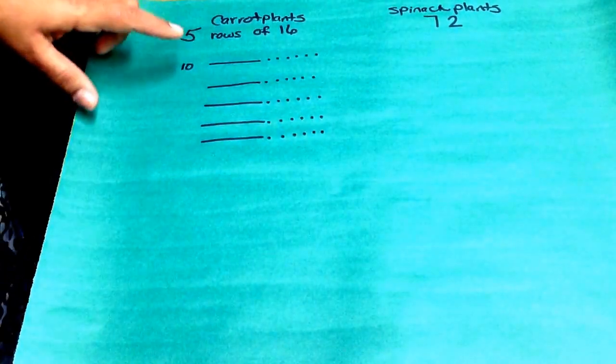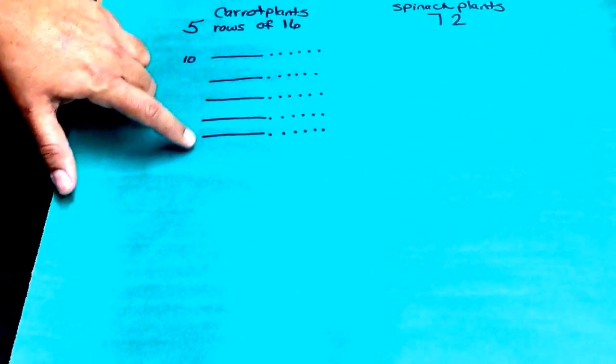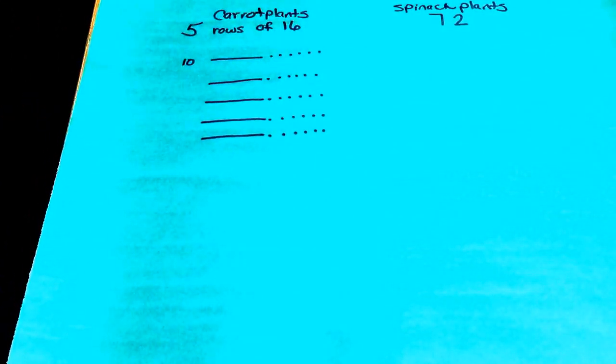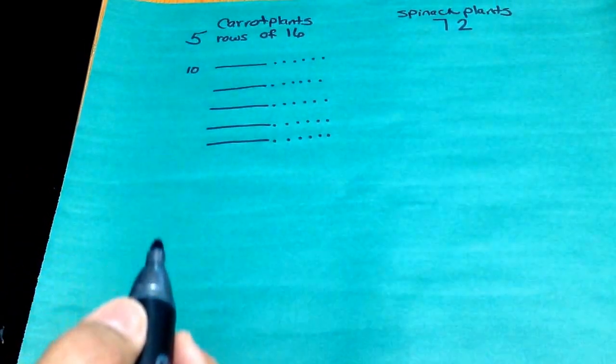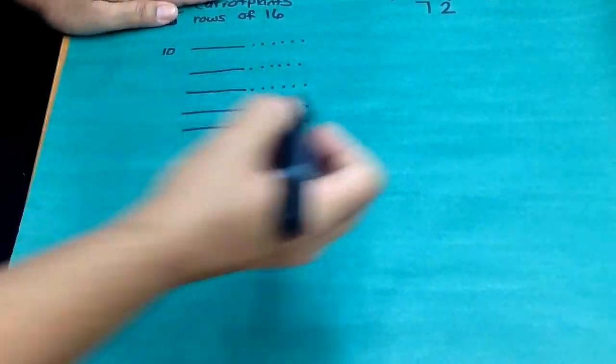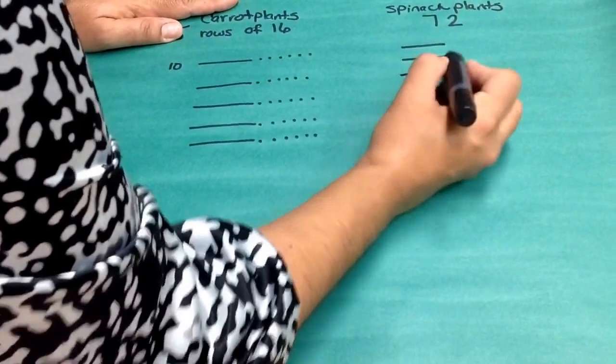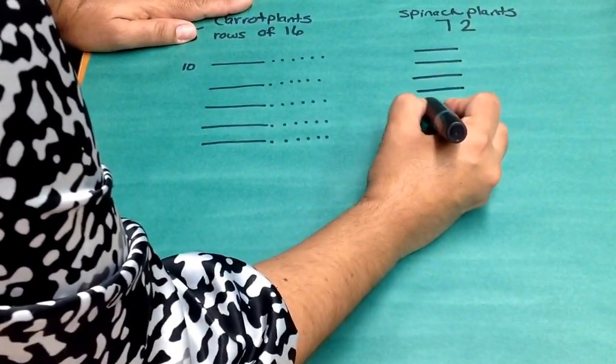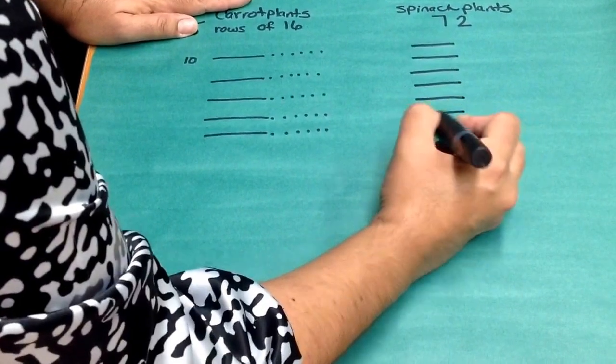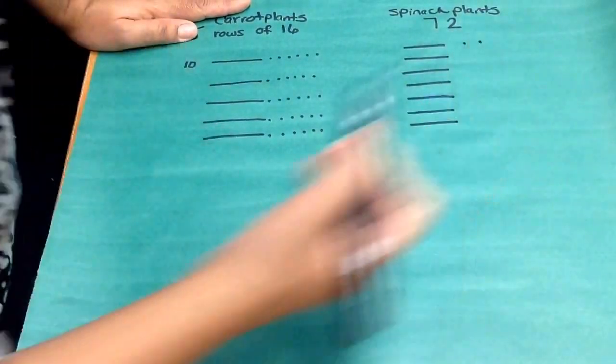Now we have five rows of 16 carrot plants in here. On the other side, I'm going to represent the 72 spinach plants. 10, 20, 30, 40, 50, 60, 70, 2.